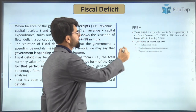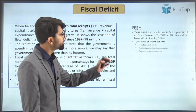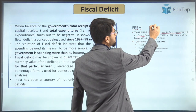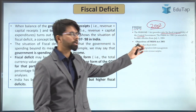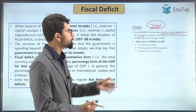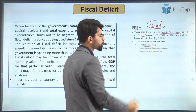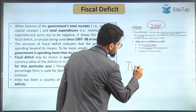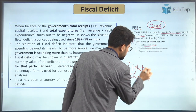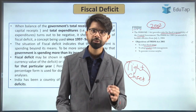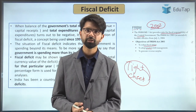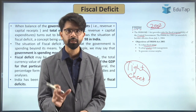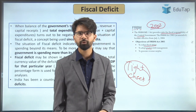FRBM stands for Fiscal Responsibility and Budget Management. The FRBM Act provides rules for fiscal responsibility of the central government. It was legislated in the year 2003 and has been effective from July 5, 2004. Its objectives are to reduce the fiscal deficit, to adopt prudent debt management, and to bring about revenue surplus. The parliament of India wanted to ensure that the government doesn't slip into a crisis like 1991 again, so the FRBM Act clearly stated that the government has to control its fiscal deficit within a certain range.